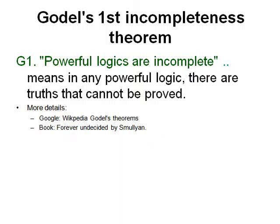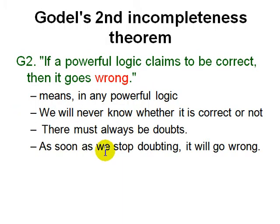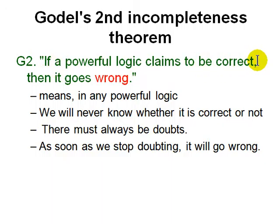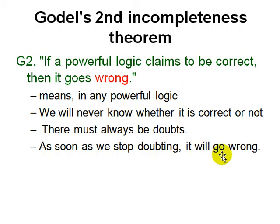Gödel's second incompleteness theorem says that if a powerful logic claims to be correct — meaning you can prove that it is consistent — then it will actually be inconsistent. So in a powerful logic, we'll never know whether it's correct or not. There will always be doubt. As soon as we stop doubting, we'll go wrong. These are the general English versions of the theorems.